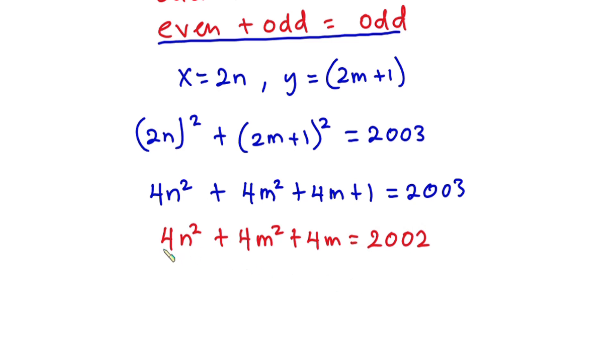Now from here, you can see that we have 4 here, 4 here and 4 here. So let's take it out. So we have 4 into n² plus m² plus m is equal to 2002.